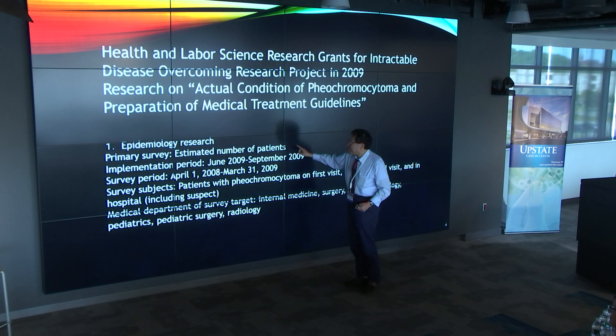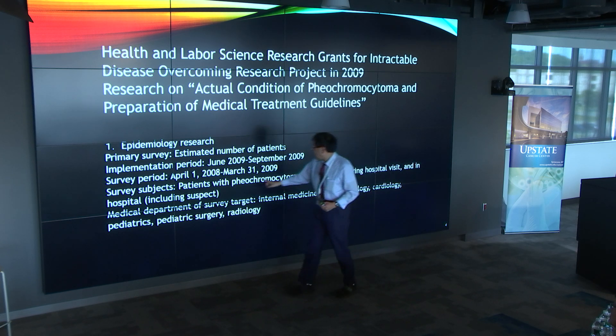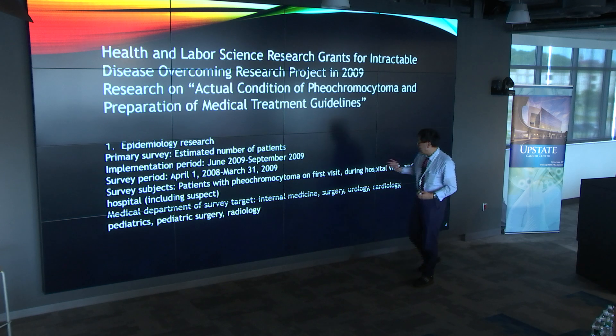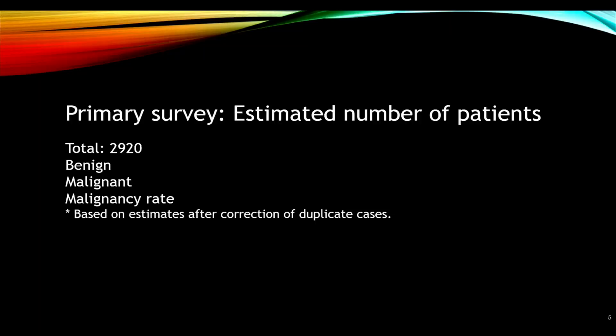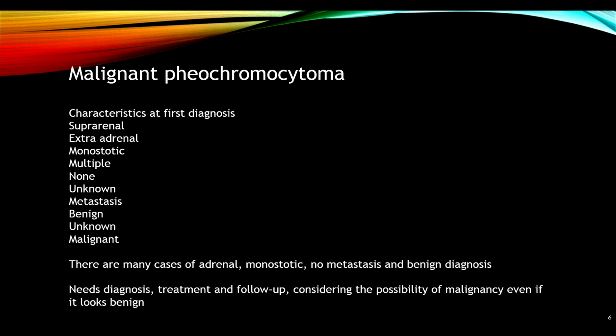The primary surgery enrollment period was just three months, but the survey period was a little more than one year. Total enrolled: 2,920 patients, both benign and malignant, including malignant pheochromocytoma. There are many cases that are adrenal and non-metastatic with benign diagnosis, which still need diagnosis, treatment, and follow-up considering the possibility of malignancy, even if it looks benign.